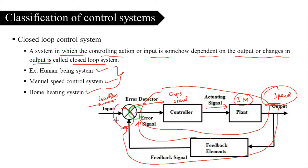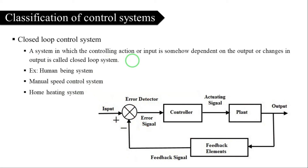Similarly, in a home heating system, you set the room temperature. The feedback is measured and compared to the set temperature to maintain the desired level.